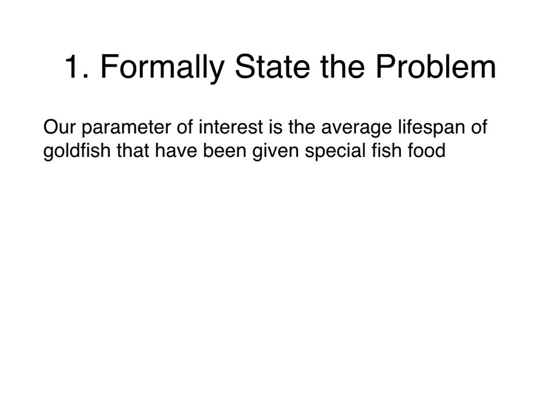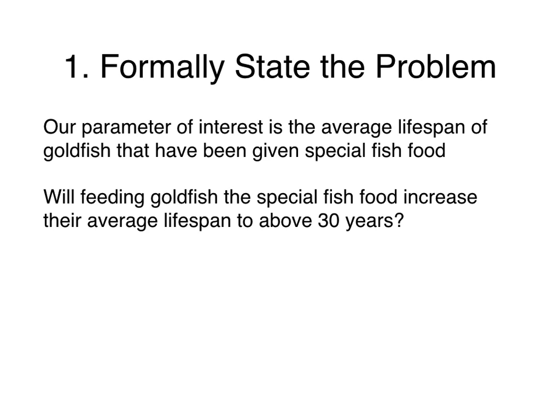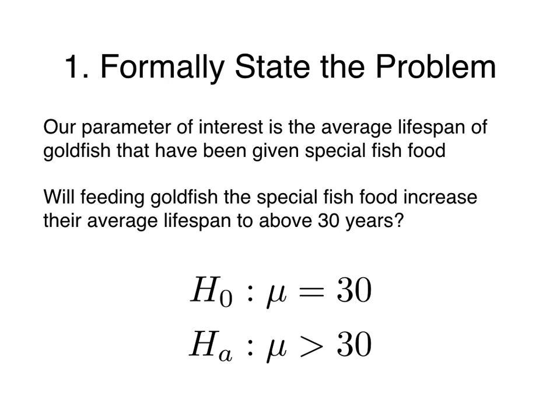Our first step is to formally state the problem. Our parameter of interest is the average lifespan of goldfish that have been given the special fish food, and we're interested in whether feeding the special fish food increases their average lifespan to above 30 years. We formalize this with a null hypothesis that mu equals 30, and an alternative hypothesis that mu is greater than 30, where mu is the average lifespan of goldfish given the special fish food.